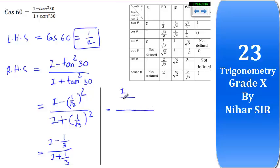1 upon 1 minus 1 upon 3. If we take LCM, then 1 and 3's LCM will be 3. 1 multiplied by what gives 3? 3. And 3 multiplied by what gives 3? 1.